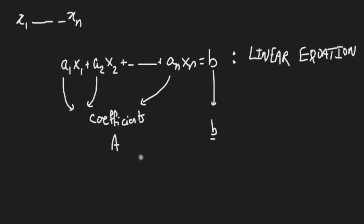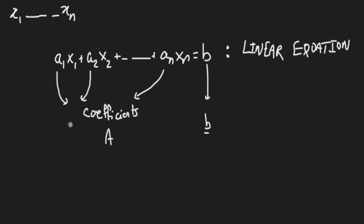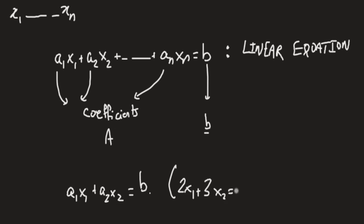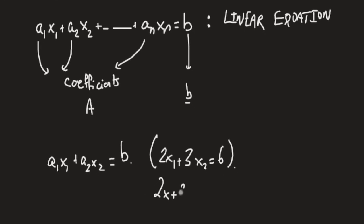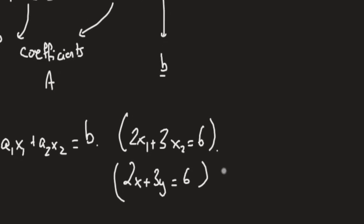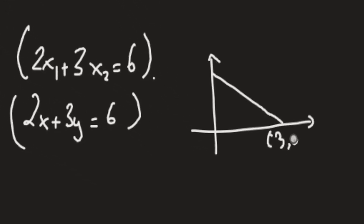This might look familiar to you. If n is 2, we get a1*x1 plus a2*x2 equal to b. An example would be 2x1 plus 3x2 equal to 6, or in the xy-plane, 2x plus 3y equals 6. This linear equation describes a line passing through the points (3, 0) and (0, 2). So linear equations in 2D are actually lines.